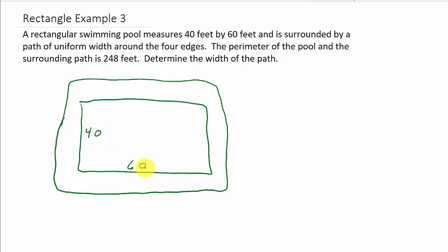What we've got to do is find the width of this path. We want to know the distance from here to here, and we'll call that x. All these distances here are x.